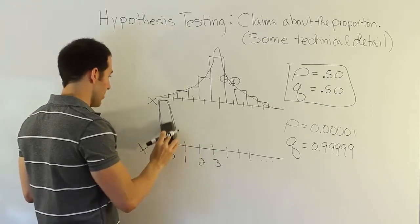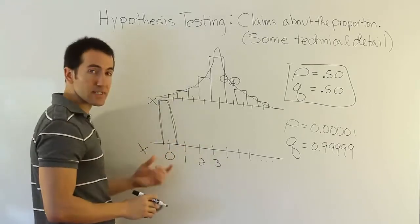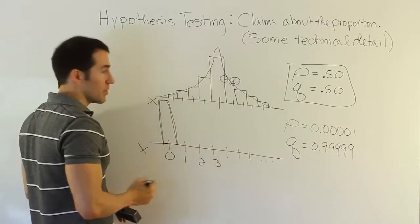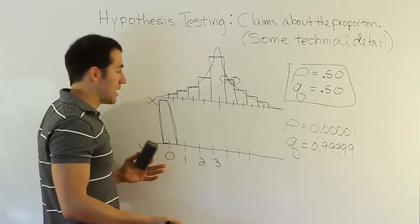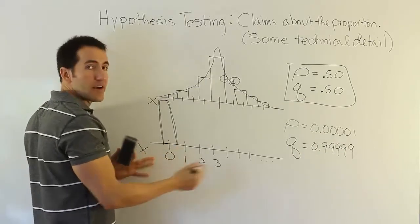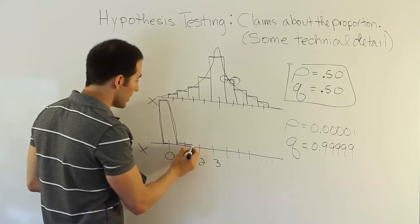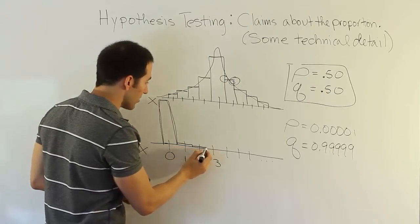Meaning that the bulk of your probability is that you have no successes, because it's so unlikely to get a success. It would be like if you're looking for a rare type of brain tumor, for example, and you'd have almost nobody out of your sample ending up with that tumor. And then, you know, you would have some small probability here, perhaps, and a very small probability here.